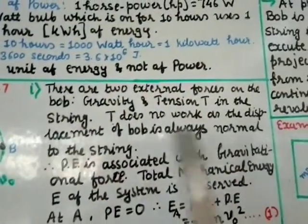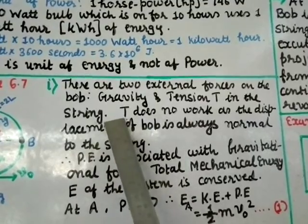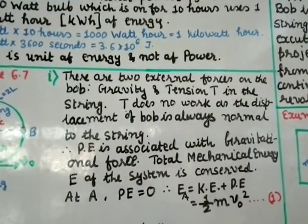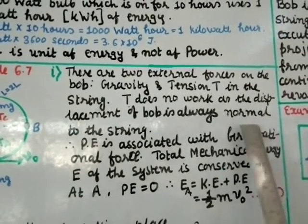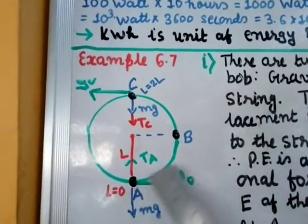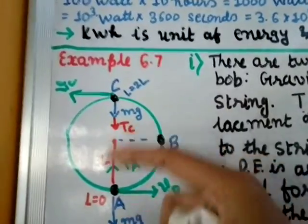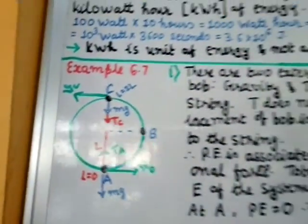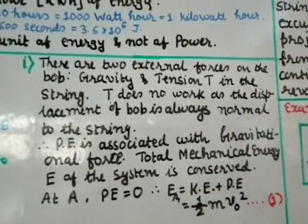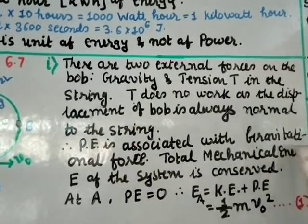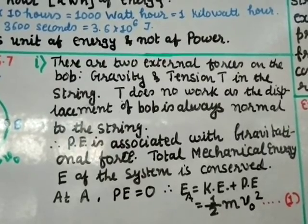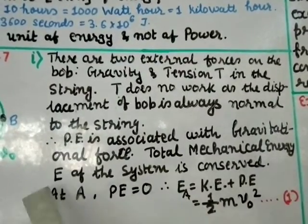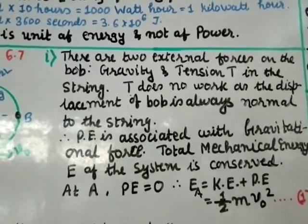Tension T in the string does no work because the displacement of the bob is always normal (perpendicular) to the string. Therefore, potential energy is associated with gravitational force only. Since tension does no work, the total mechanical energy of the system is conserved.